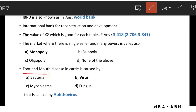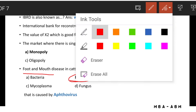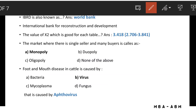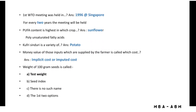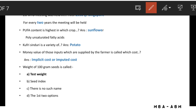Foot and mouth disease in cattle is caused by a virus — Heptovirus. The first WTO meeting was held in 1996 at Singapore, and WTO meetings are held every two years.